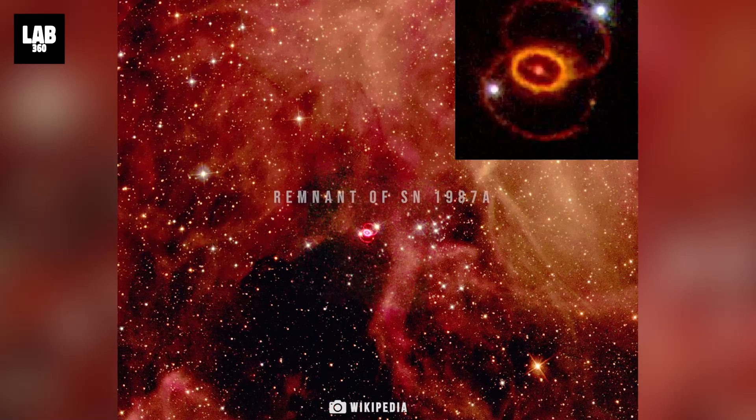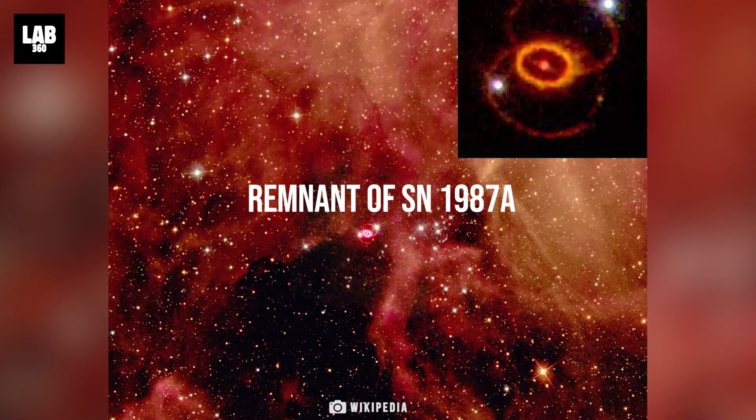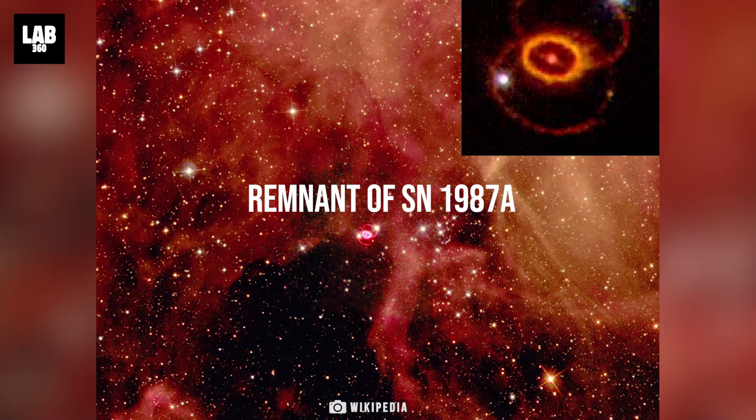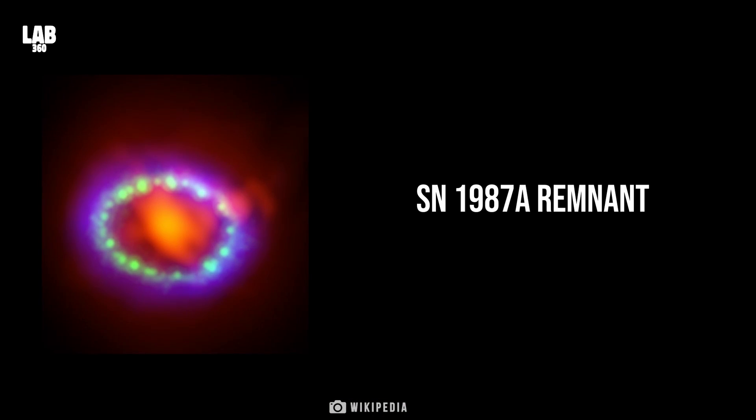The last supernova visible to the unaided eye happened in 1987 and was designated SN 1987A. It occurred in the Large Magellanic Cloud, which is a satellite galaxy of the Milky Way.